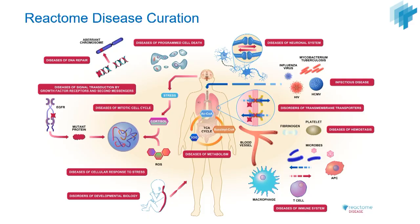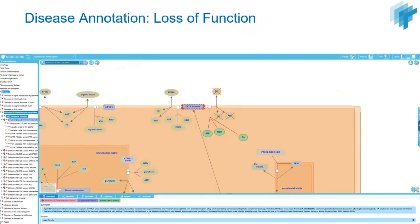We normally curate what we call a generic human cell, which has more or less all the possible pathways in human. But we also increasingly do disease curation, pointing out what is specific in a certain disease, and we do this in a number of principled ways.